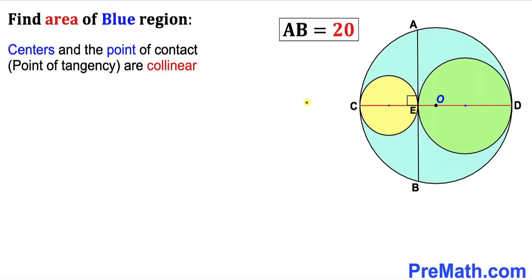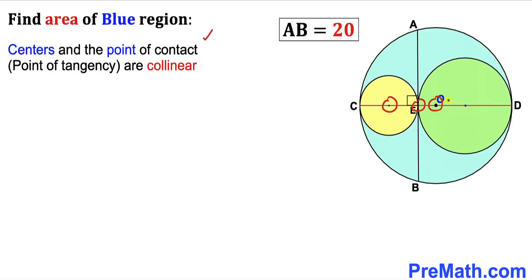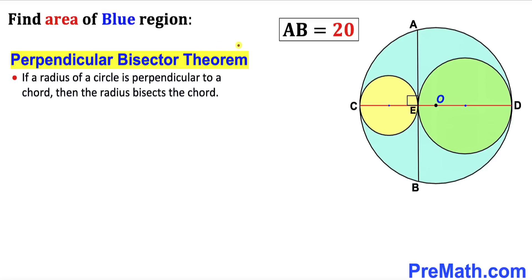Now let me go over these basic things. Point E is the point of tangency, and the labeled points are the centers of all three circles. Keep in mind that the center and the point of tangency are collinear — in other words, all these points lie on the very same line. Now let's recall the perpendicular bisector theorem: if a radius of a circle is perpendicular to a chord, then the radius bisects the chord.